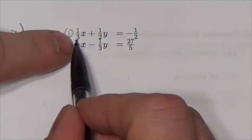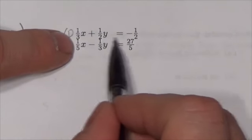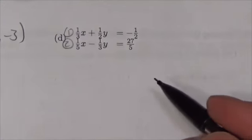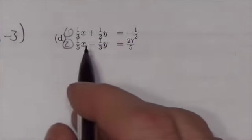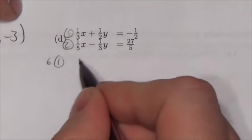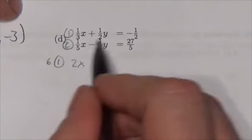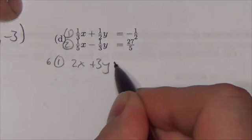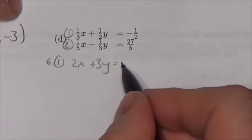So look at the denominators in the first equation, 3 and 2. The smallest common multiple of those numbers is 6, so I'm going to multiply equation 1 by 6. 6 times a third is 2, 6 times a half is 3, and 6 times negative a half is negative 3.